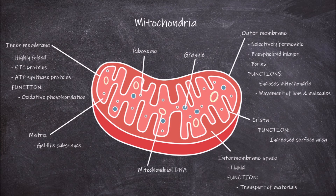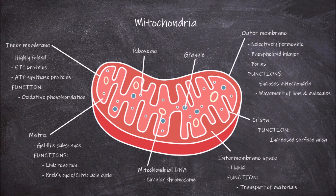Within the matrix, the mitochondrial DNA is also located. Mitochondrial DNA consists of a circular chromosome. The main functions of the matrix are that it is where both the link reaction and Krebs cycle, also known as the citric acid cycle, take place, which are both steps in respiration. It also functions in containing the mitochondrial DNA.